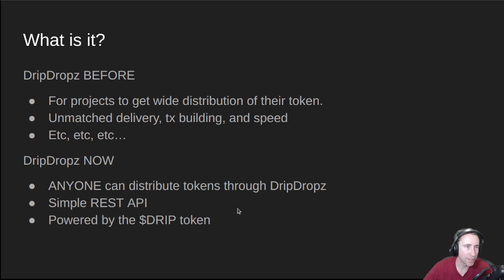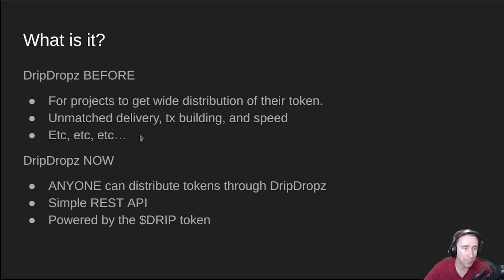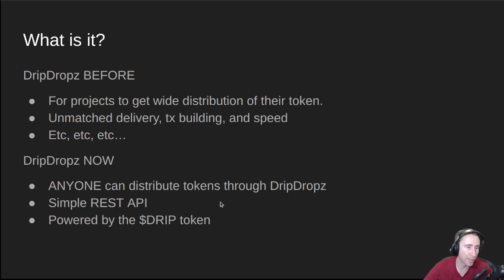So what is Drip Drops Instant Rewards? Before today, Drip Drops was used for projects to get wide distribution of their token — it was always the project themselves that released the tokens. How Drip Drops is changing is now anyone can choose to distribute tokens through Drip Drops. If you have a community, a game, or you're a stake pool operator and want to reward your delegators specially, you can do all of that through the Drip Drops simple REST API. All of this is powered by the Drip Token.